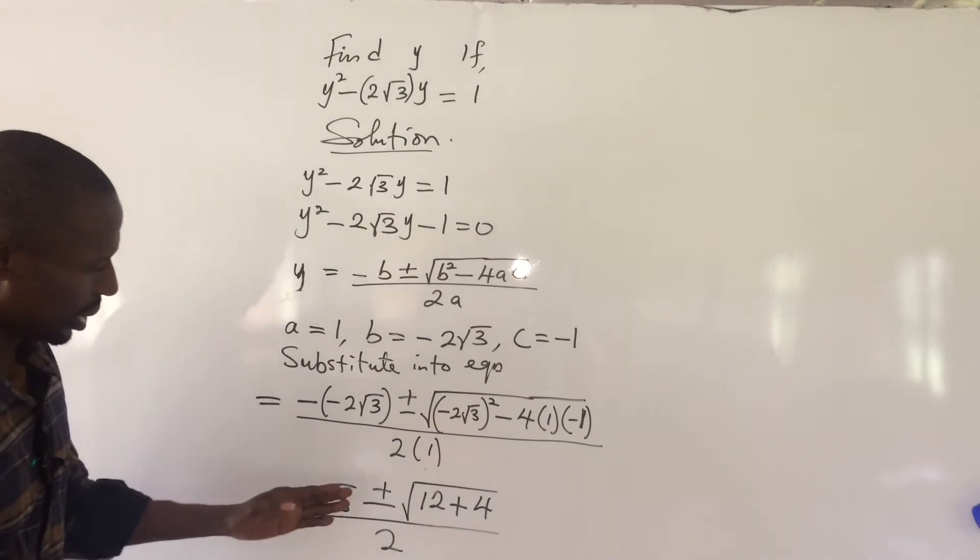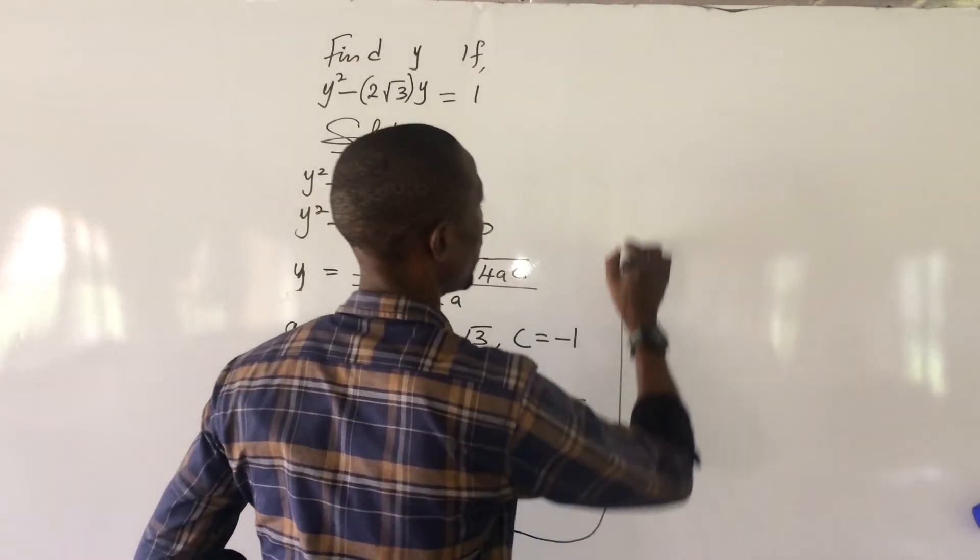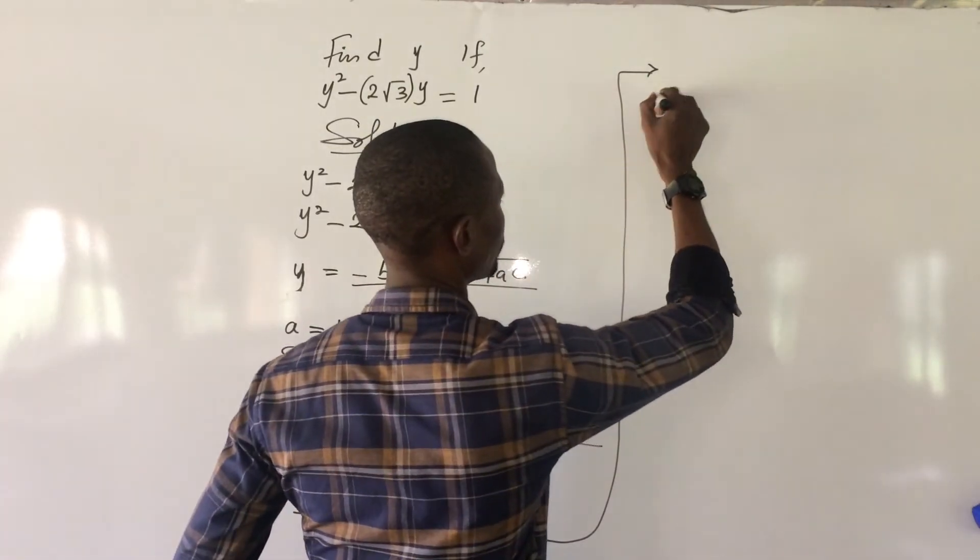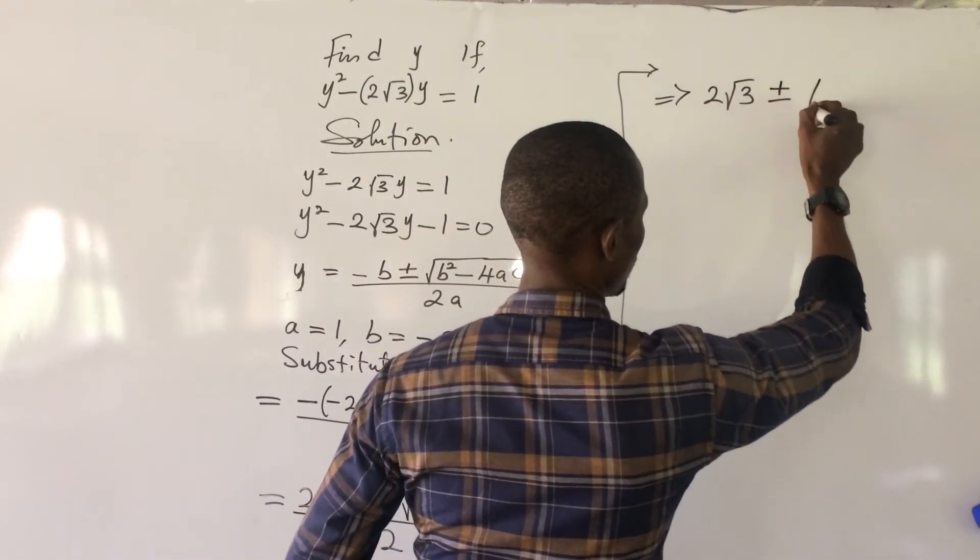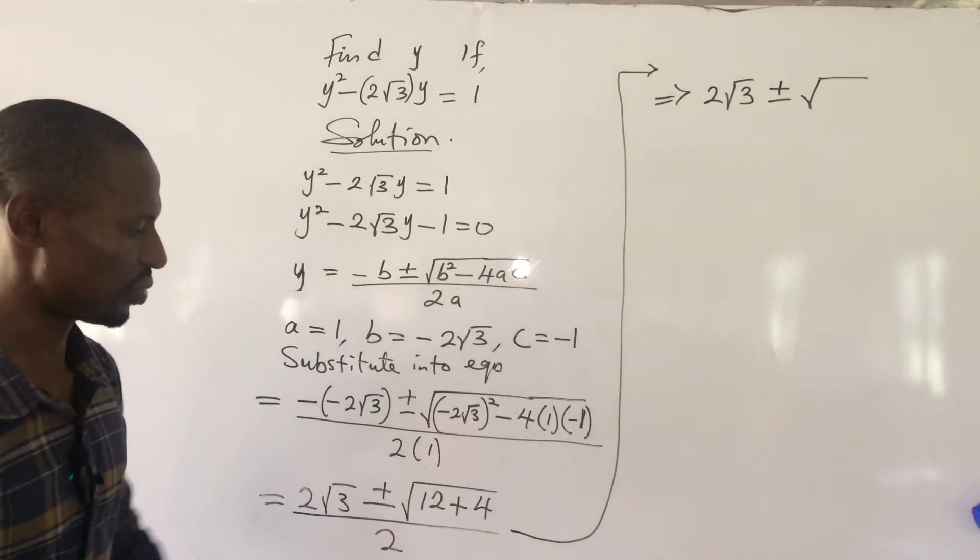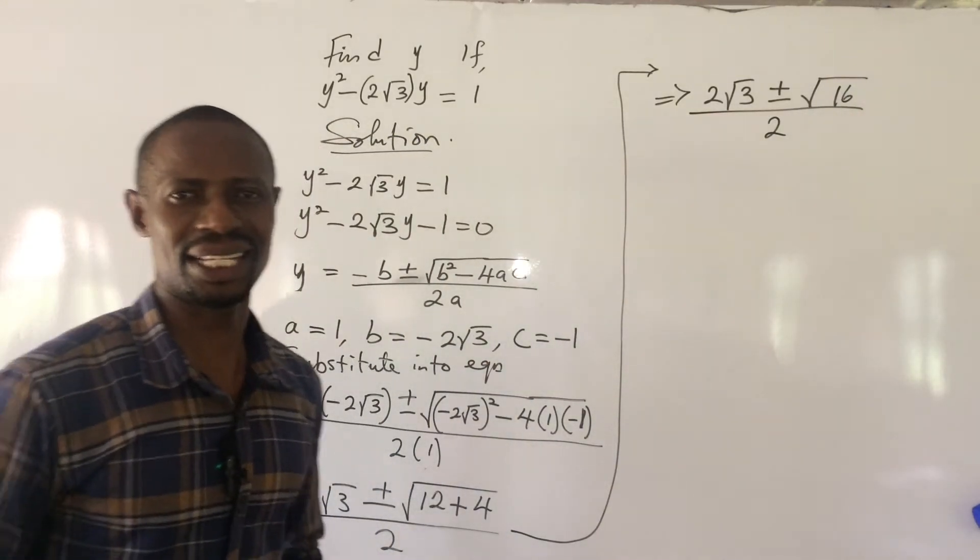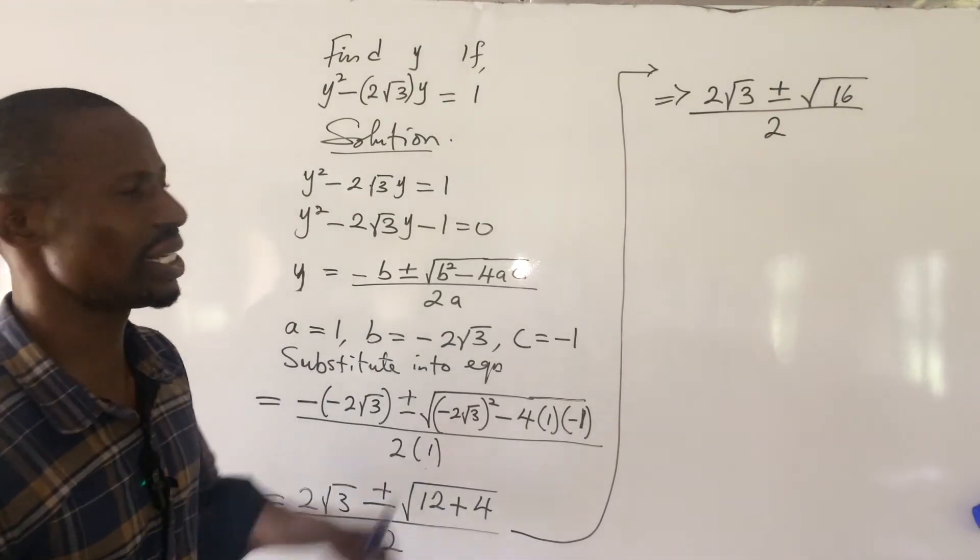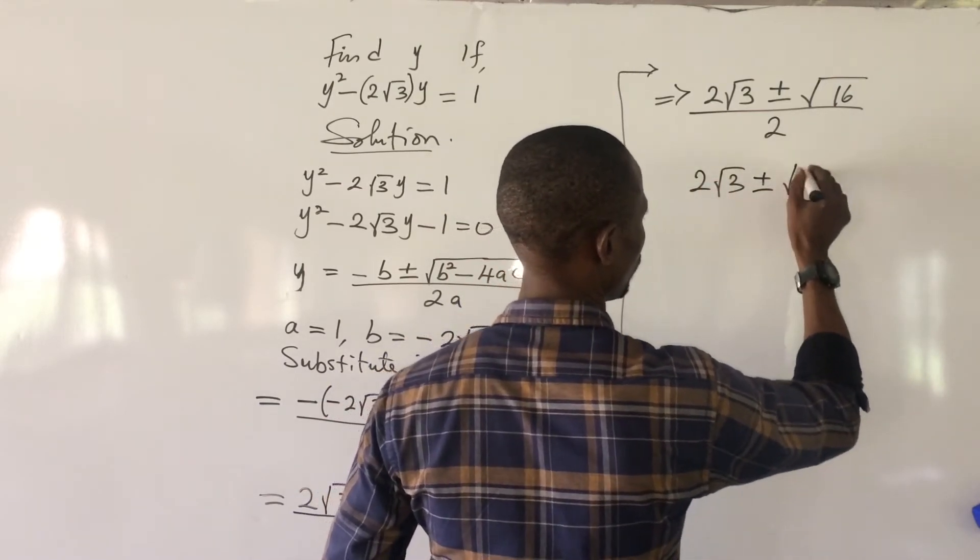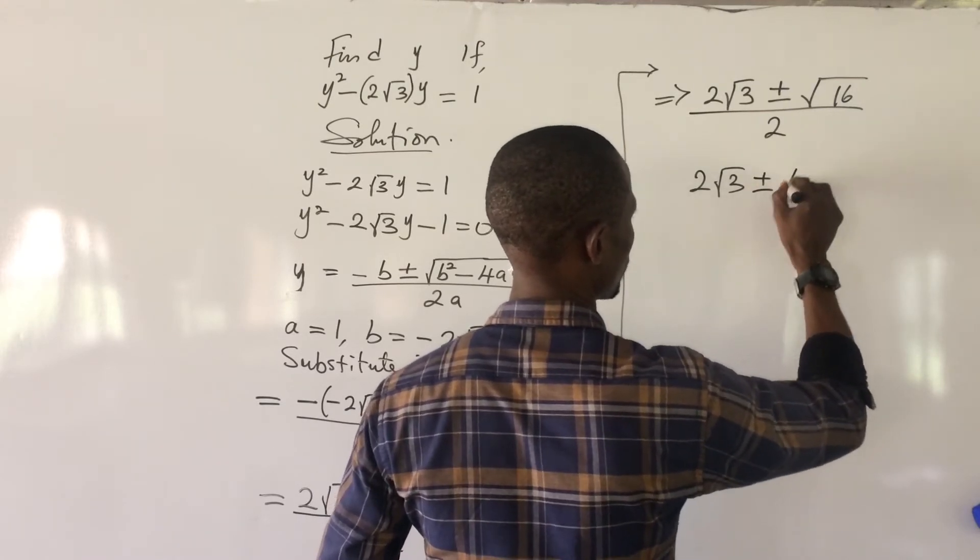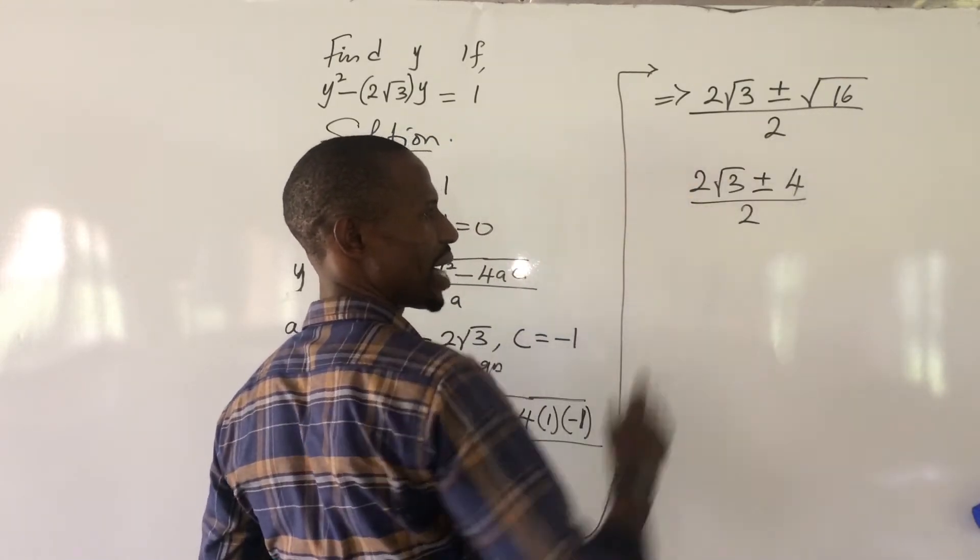All right. So, from here, let's proceed to add the terms we have in the square root. So, we now have this implies 2 root 3 plus minus the square root of 12 plus 4 is 16. So, we have here 16. All over 2. All right. Now, 16 is a perfect square. So, the square root of 16 will give us 4. So, this gives us 2 root 3 plus minus 4 all over 2. So, we can go ahead to simplify this plus minus sign in here.